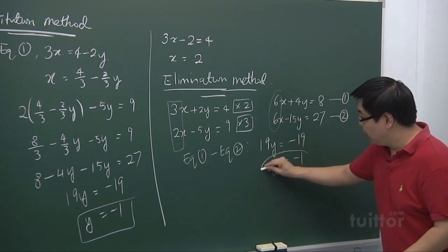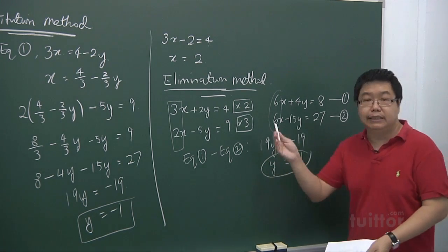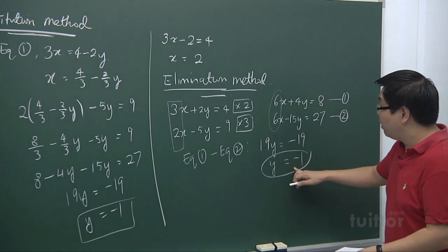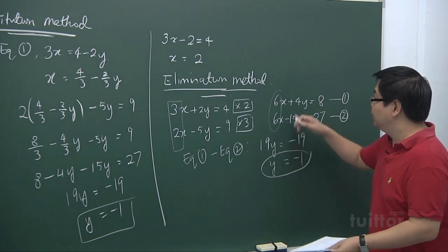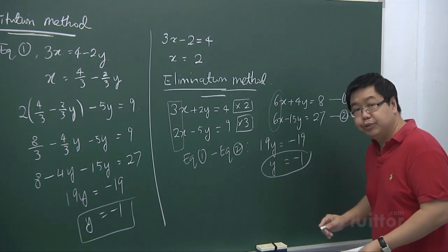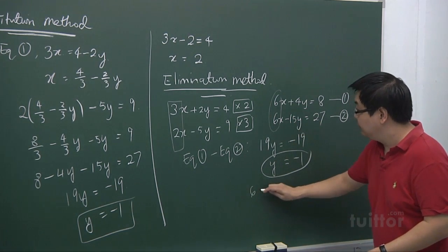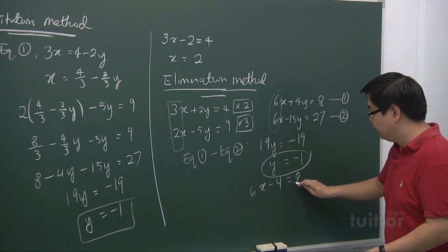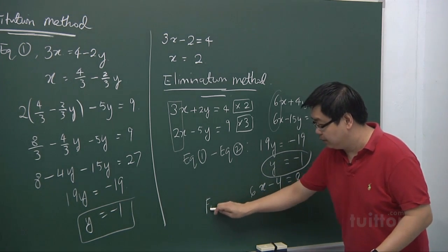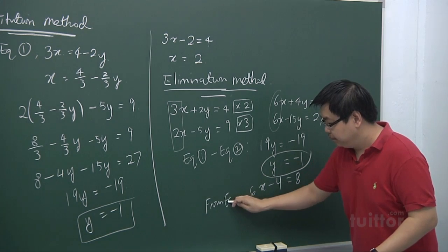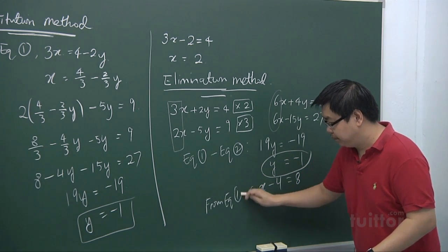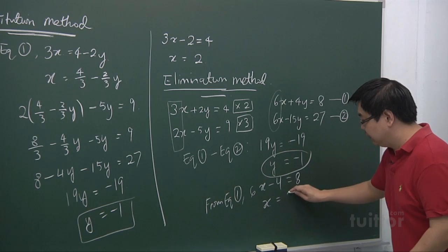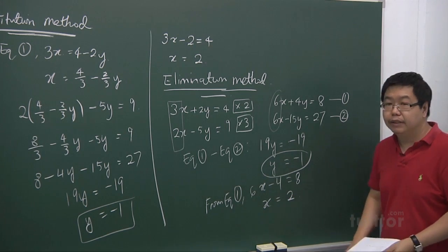Once we get the y value, you do the same thing as in the substitution method — substitute y equals minus 1 into either equation 1 or equation 2. So we have 6x minus 4 equals to 8, that is from equation 1. Simplifying, you get x equals 2 as well.